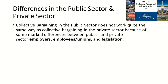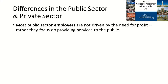The real difference between public and private sector collective bargaining lies in three major areas: the employers are different, the employees and unions are different, and the legislation is different. First, most public sector employers are not driven by the need for profit. Government's major role is to provide services of a certain quality to the public, who pay for those services through taxes. The private sector, on the other hand, is focused on making profit — minimizing costs and maximizing revenues.